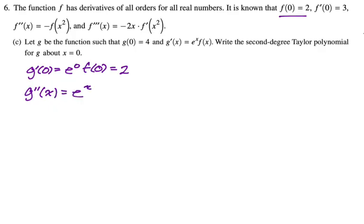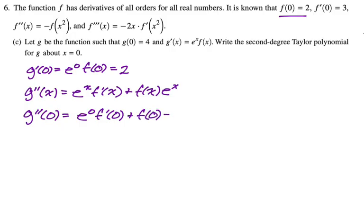g double prime, we're going to be using the product rule. First, derivative of the second, plus second, derivative of the first. We need to evaluate this at zero. So g''(0) will be e^0 · f'(0) plus f(0) times e^0. All the e^0s go away. So that's f'(0), which is three, plus f(0), which is two. So three plus two, which is five.